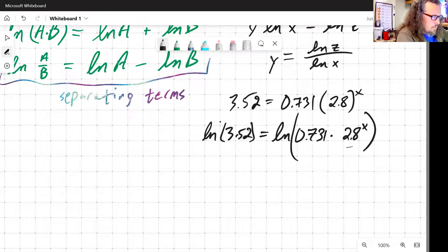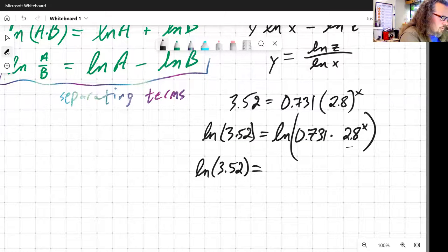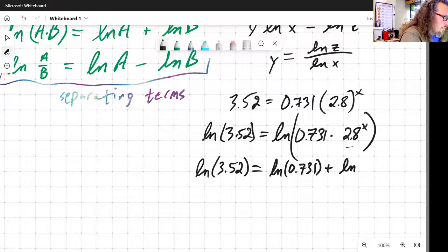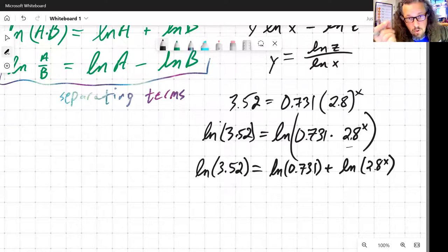Well, I know that the natural log of a product like this, natural log of 3.52 is equal to, I can separate these by splitting them out and adding them together. So natural log of 0.731 plus natural log of 2.8 raised to the x.